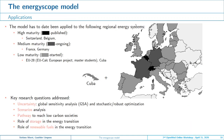The Energy Scope model has been applied to several countries. At this time, Switzerland and Belgium, where we have already published several papers, and we are working on France, Germany, Italy, and other European countries. As we are not experts on all countries, we like to collaborate and exchange with local people to propose accurate results.